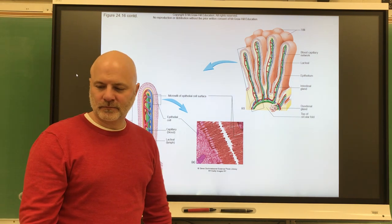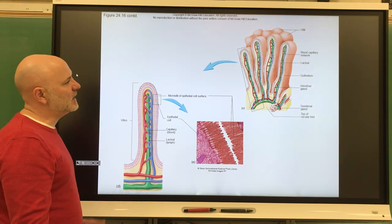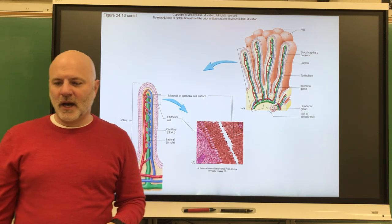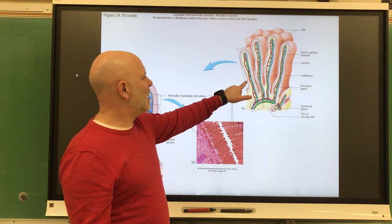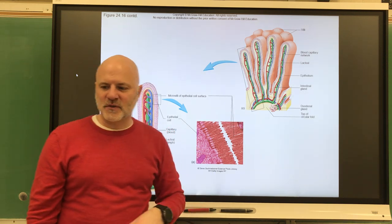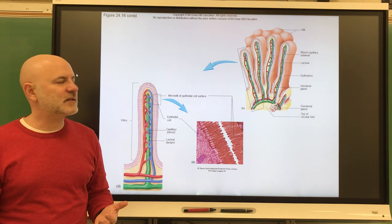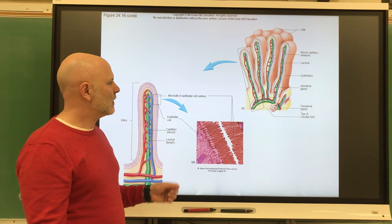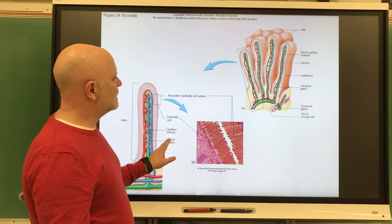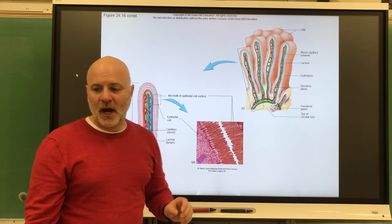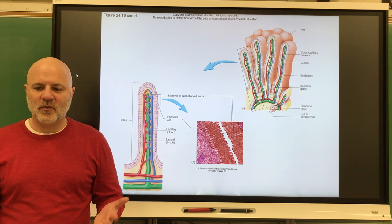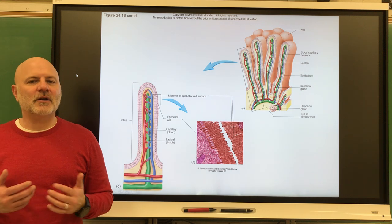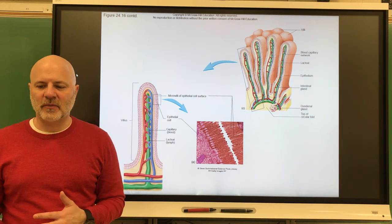Looking at the histology of the small intestine: in the mucosa, cells are mainly absorptive, with goblet cells producing mucus and many lymphocytes present. This layer regenerates in three to six days. In the submucosa, Peyer's patches — lymphoid tissue follicles — increase toward the end of the ileum and defend against bacteria from the large intestine.